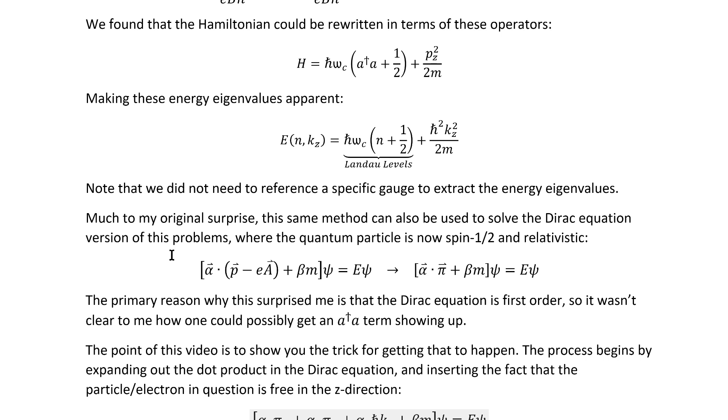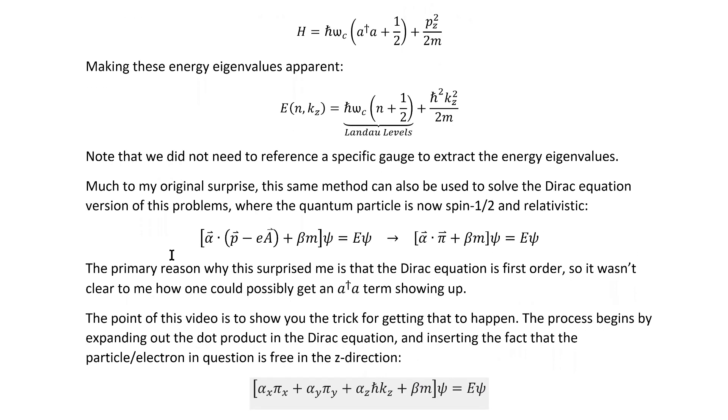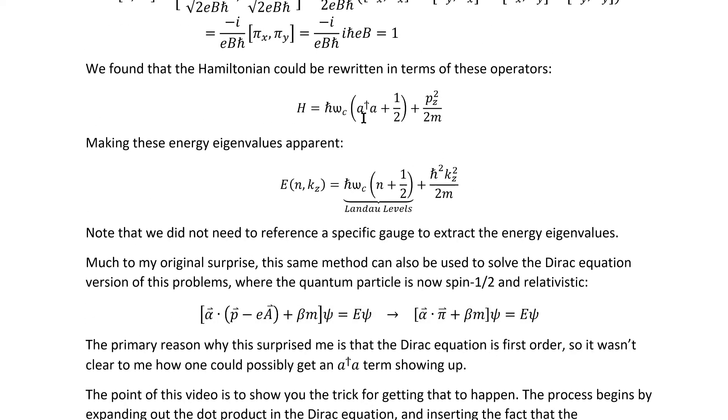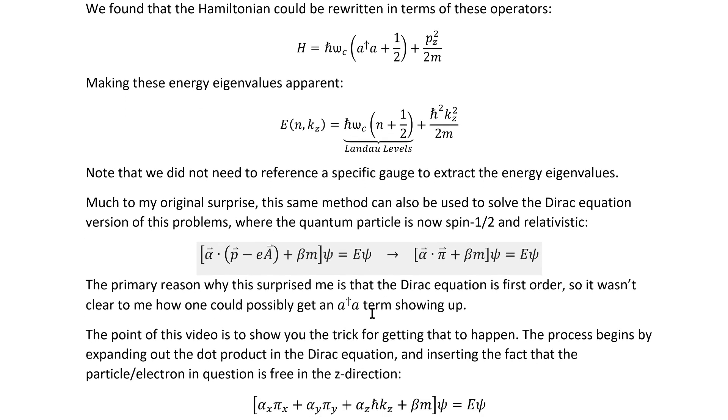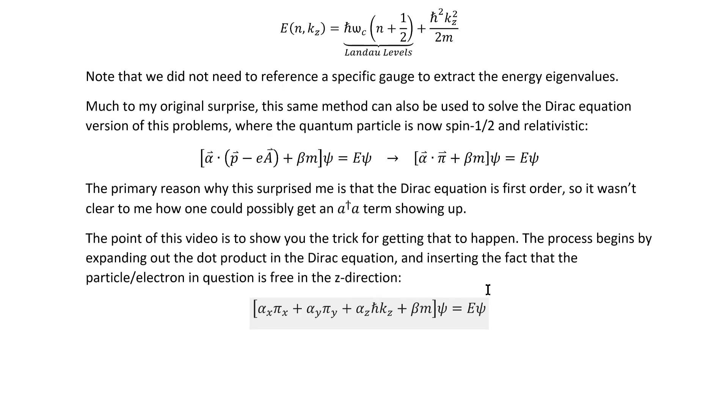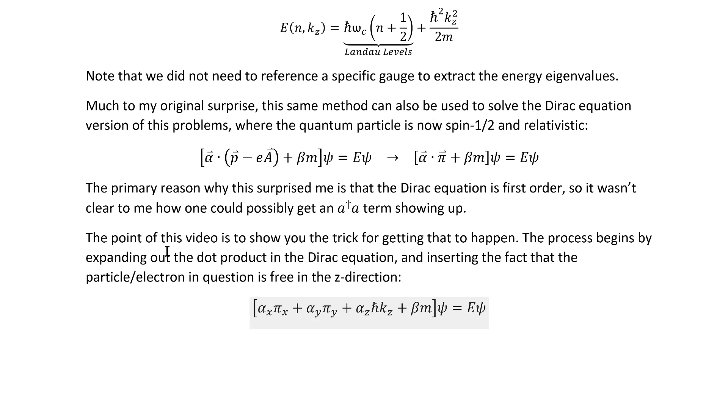Now as I mentioned earlier, much to my original surprise, this same method can also be used to solve the Dirac equation version of this problem for a relativistic quantum particle that's spin half. Now this surprised me primarily because, as you can see here, the Dirac equation is first order so there's no clear way to get an A dagger A product to show up which definitely is second order. It's clear how that could happen in the Klein-Gordon equation but the Dirac equation, before learning explicitly that this is actually a way to solve the Dirac equation too, I wouldn't have thought that you could do that. It just wouldn't have occurred to me. Now the point of this video, therefore, is to show you the trick for getting it to happen and it is pretty cool.